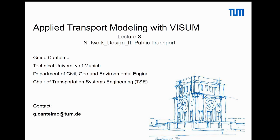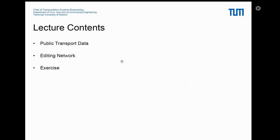Welcome back to the course of Applied Transport Modeling with Visum. I'm Guido Cantelmo and today we're going to talk about Network Design Part 2: Public Transport. I'm going to try to keep the class relatively short because last time was a little bit longer. Today we're going to look at how to download data about public transport, how to edit the network to take into account public transport characteristics, and I'll show you one optional exercise.